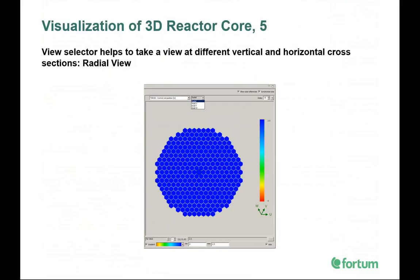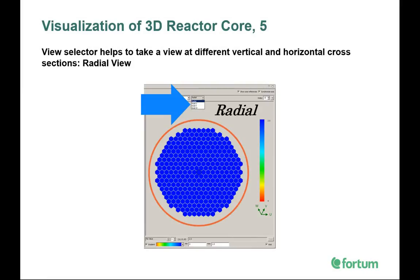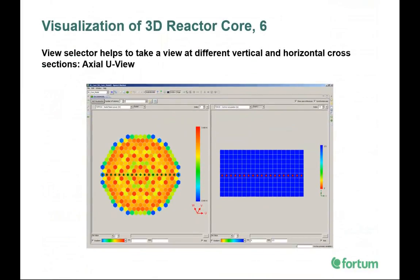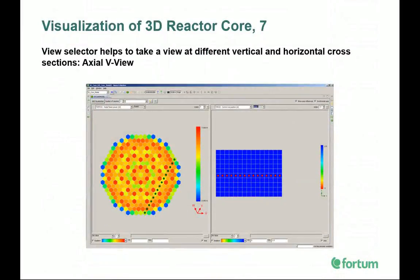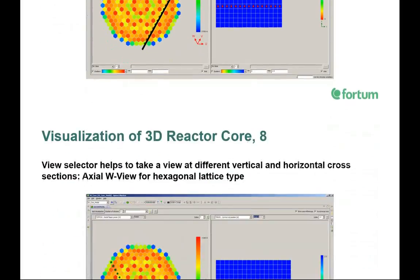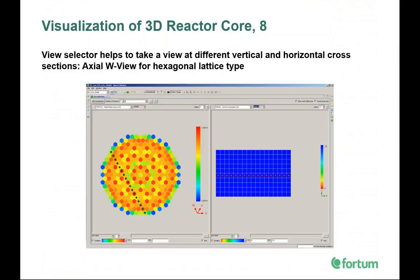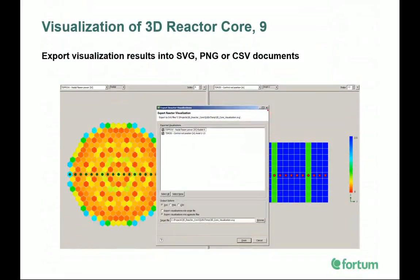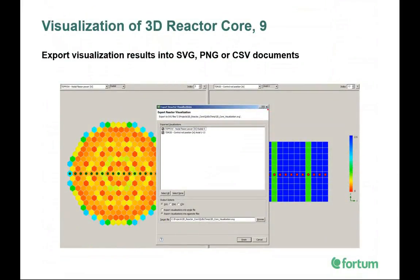With a view selected, you can look at a Radial cross-section slice, a Vertical U cross-section slice, a Vertical V cross-section slice, or a Vertical W cross-section slice. For a rectangular lattice you only need R, U, and V views. If you have a hexagonal lattice, you will also need W. APROS VI also allows you to export visualization results into SVG, PNG, and CSV documents.